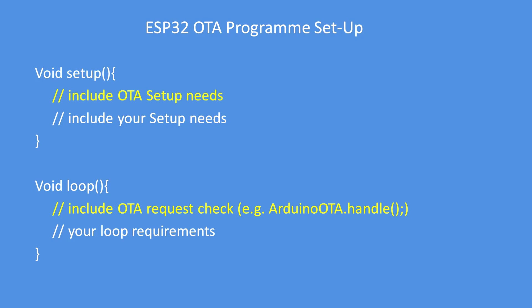Here's a reminder of how to implement over-the-air updates. Take your sketch and supplement it with the over-the-air setup requirements in addition to your own. Include in the main loop the requirement to poll for over-the-air update requests — that's the ArduinoOTA.handle function. Add that to your loop and your sketch will support over-the-air updating.